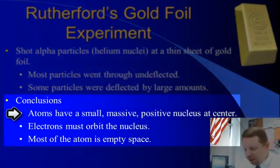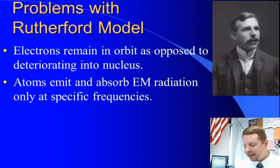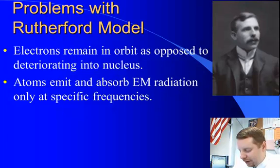First, that atoms have a small, massive, positive nucleus at their center. Secondly, electrons must orbit the nucleus. And third, most of the atom is empty space. And there's a picture of Ernest Rutherford there on the right.